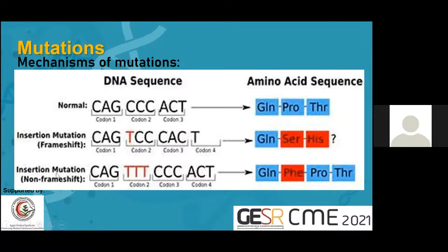We also have insertion mutations that do not cause a frame shift. For example, insertion of T-T-T-T leads to a complete amino acid insertion between glutamine and proline. In this case, the reading frame is maintained and an extra amino acid is simply inserted into the protein sequence.